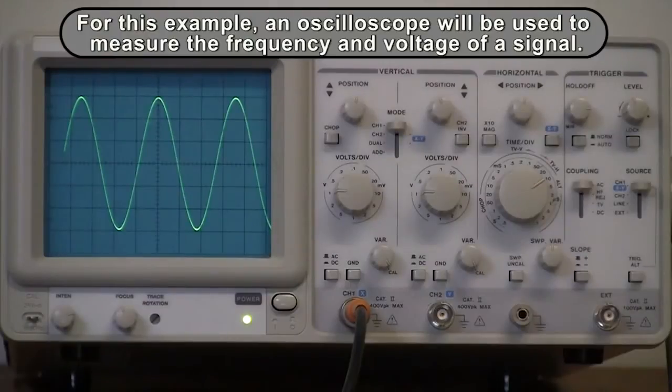For this example, an oscilloscope will be used to measure the frequency and voltage of a signal.